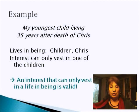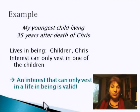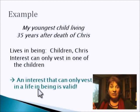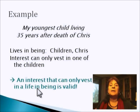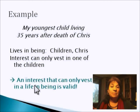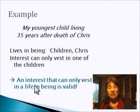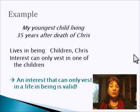The interest can only vest in one of those children. There's this rule: any interest that can only vest in a life in being is valid. We're there, done. We don't care about the 35 years — it doesn't matter because we're going to vest in one of those people, or not. If they both die before 35 years after the death of Chris, then those interests fail. But we will know within the lifetimes of these two children.